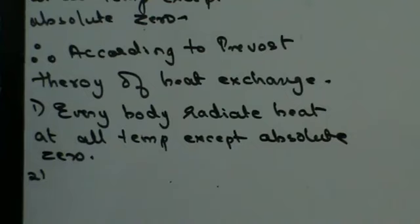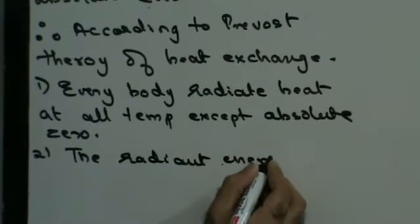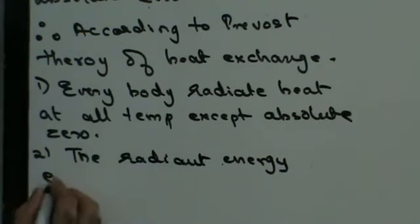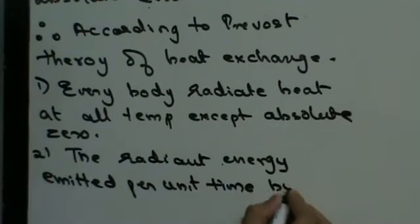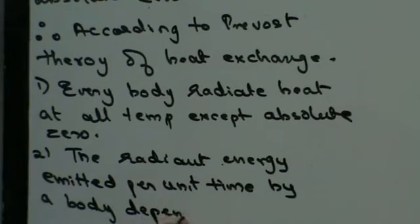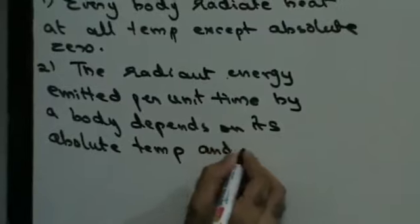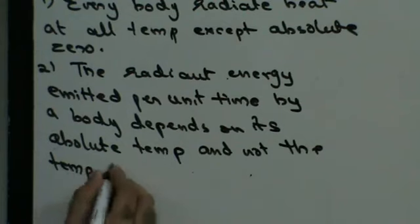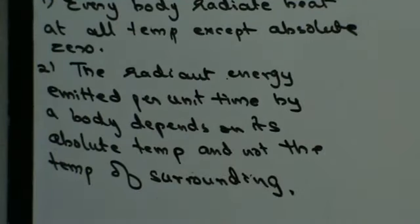And second, the radiant energy emitted per unit time by a body depends only upon its absolute temperature. It does not depend upon the temperature of the surrounding. If it does not depend upon the temperature of the surrounding, let us see three conditions.